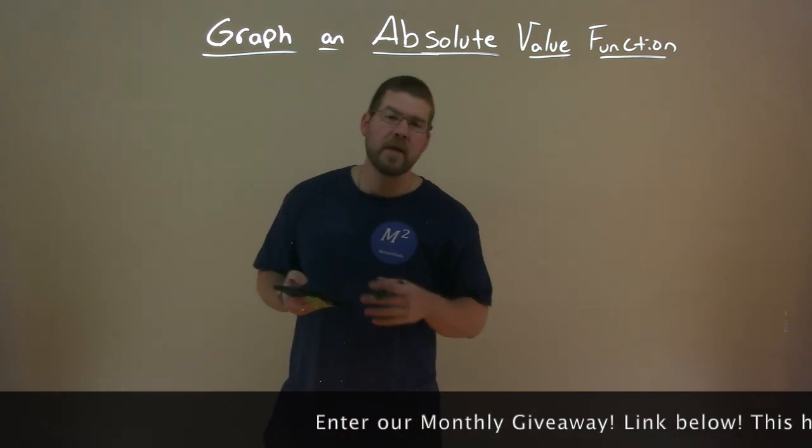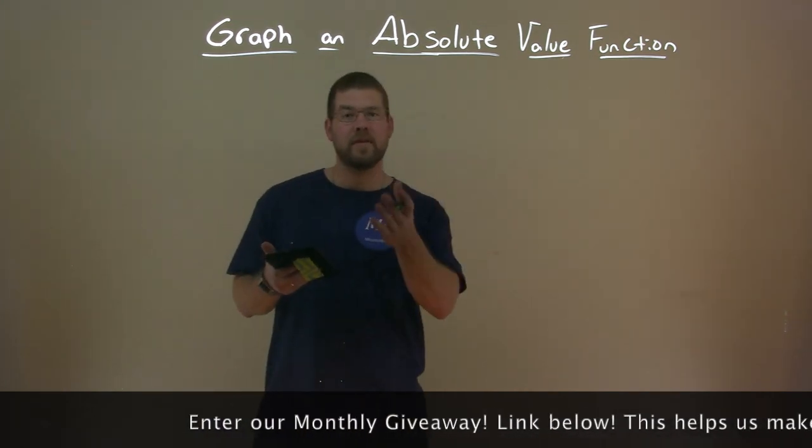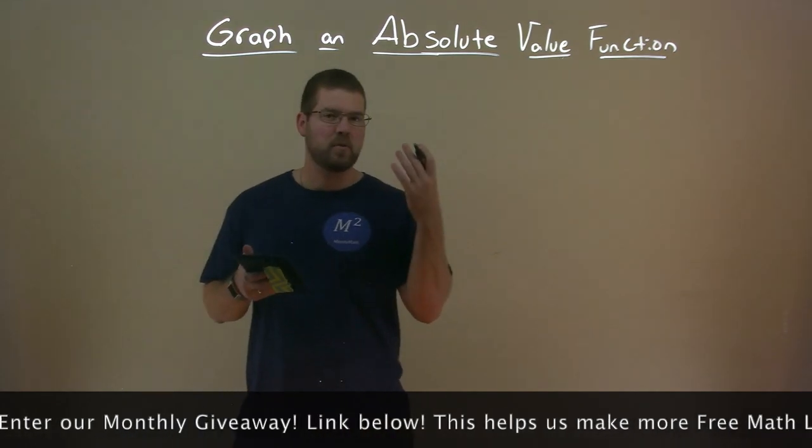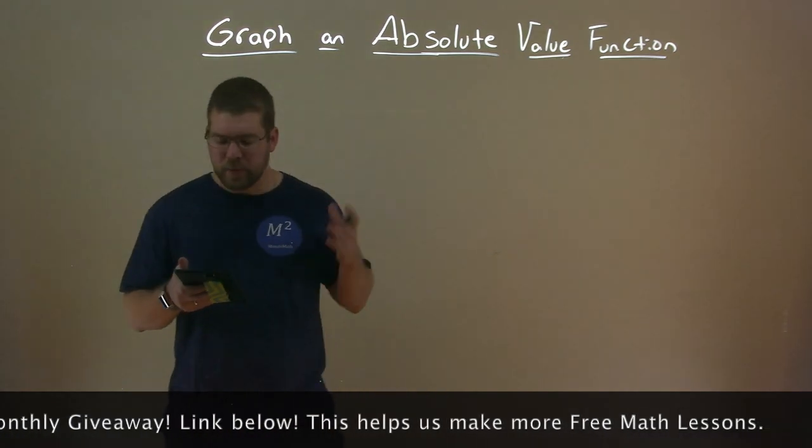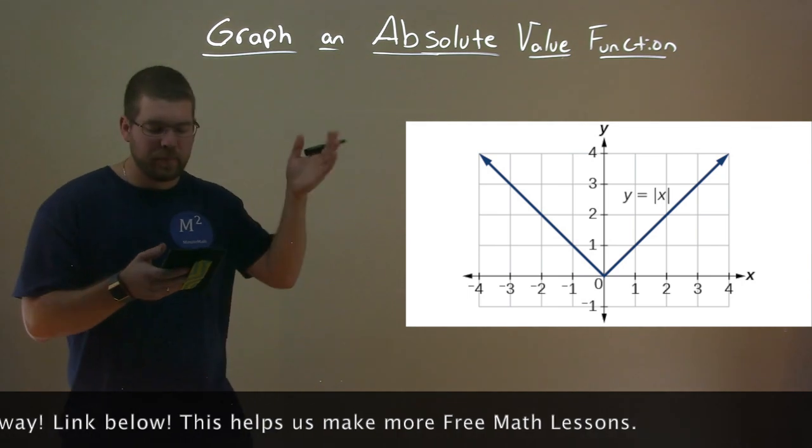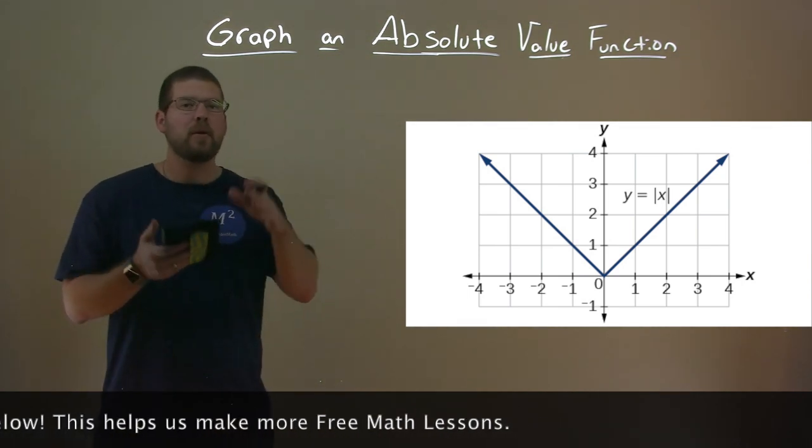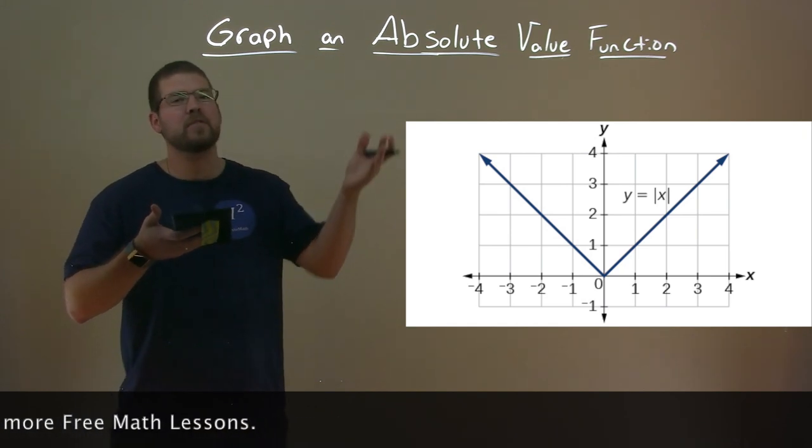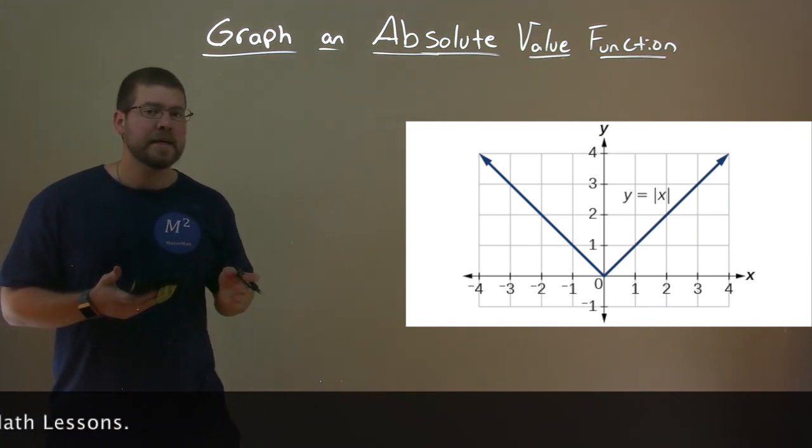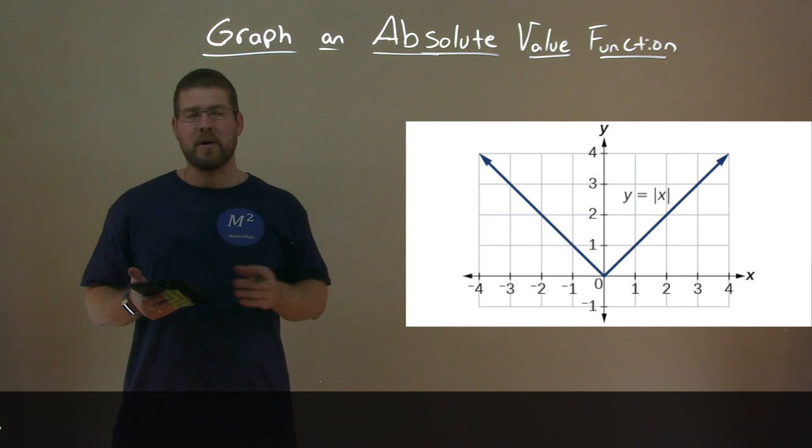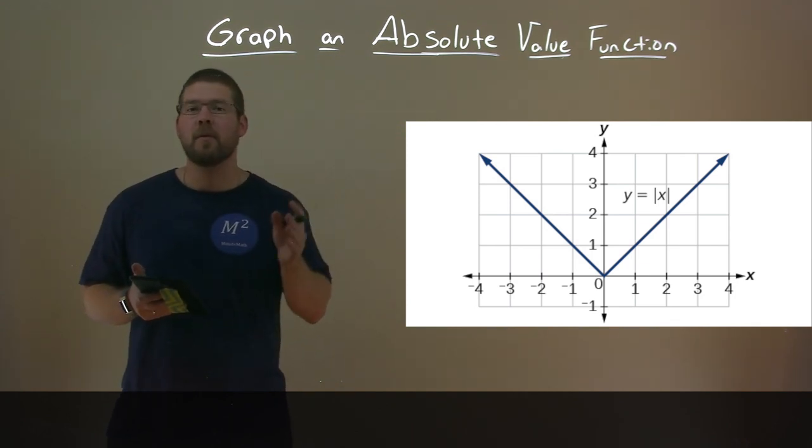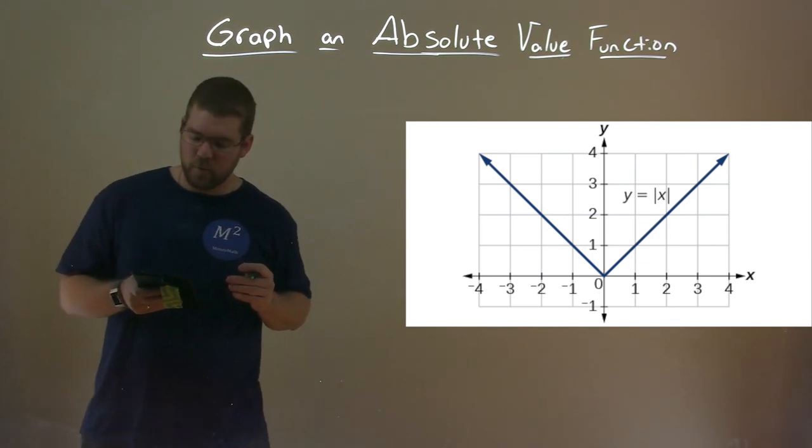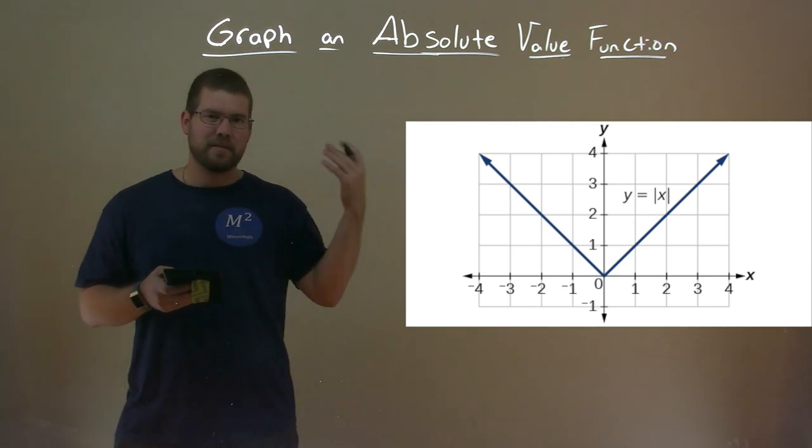Alright. So now you've understood the basics of an absolute value function, let's talk about its graph. So right here, we can see the graph of the absolute value of x. It's our basic, what we call the toolkit function. It's a base to start with when we're graphing absolute values. But all absolute value graphs look just like that, at least some adaptation of that graph.